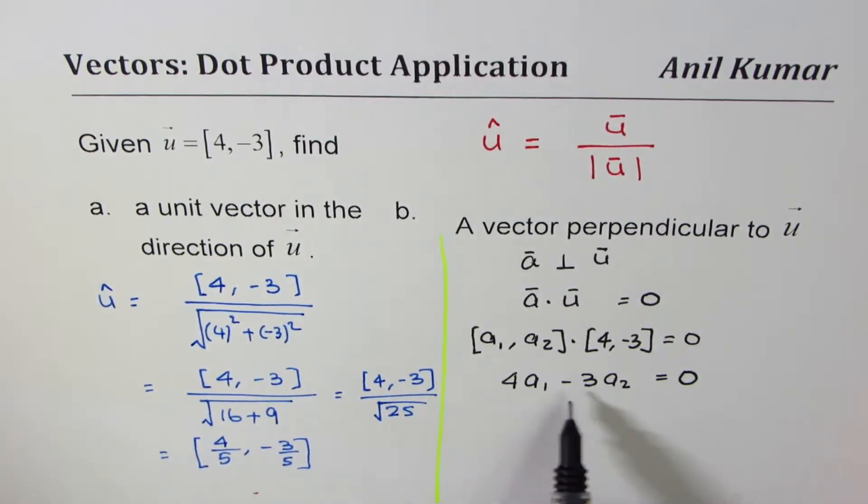Now different combinations of a₁ and a₂ can give you the result. The best approach we normally take is to set a₂ as this number 4. In that case, a₁ will be 3.